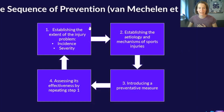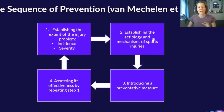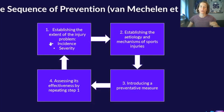The first step in that framework is understanding the extent of the injury problem. Based on those injuries, understand the etiology — what might cause those injuries and specifically the mechanisms. Based on that understanding, bring in a preventative measure, and then repeat step one by once again quantifying and comparing your injury problem. This was a real keystone paper that provided researchers with a framework to start exploring injuries and how we might reduce them.